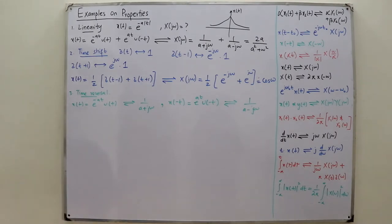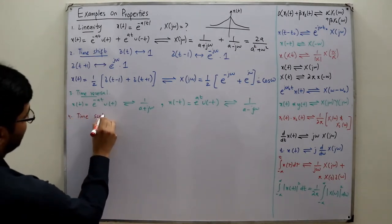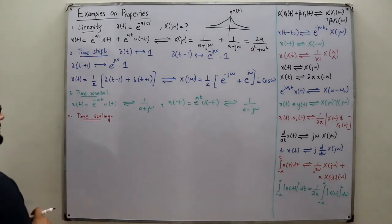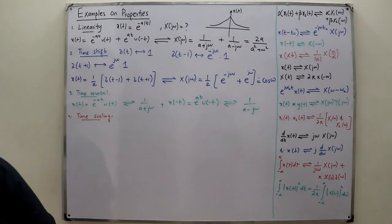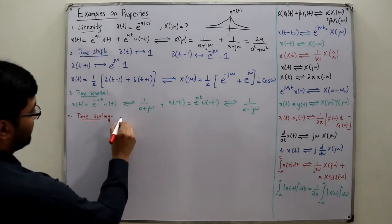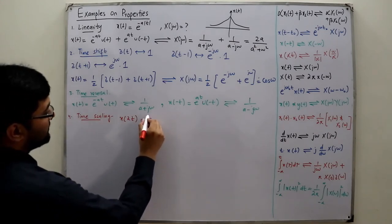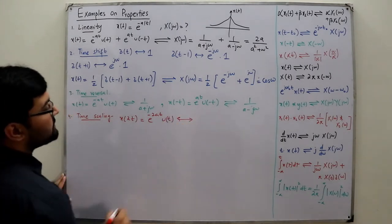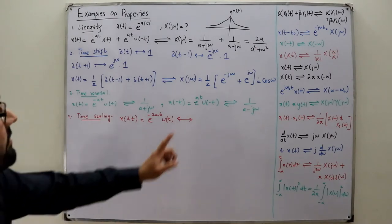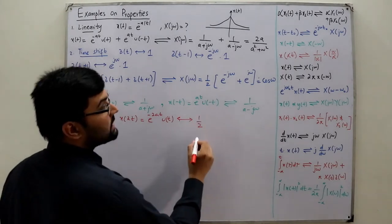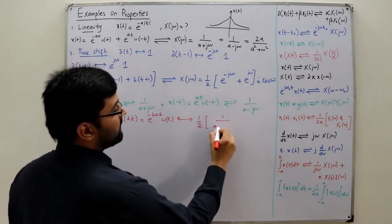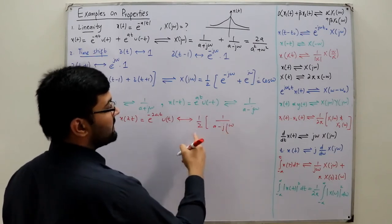The fourth property is time scaling. Consider the same signal e^(-at)u(t) with Fourier transform 1/(a + jω). Now if we have x(2t), the signal becomes e^(-2at)u(t) — since u(2t) = u(t). The time scaling property gives (1/|a|) × X(jω/a), where a = 2, so we get (1/2) × 1/(a + jω/2).